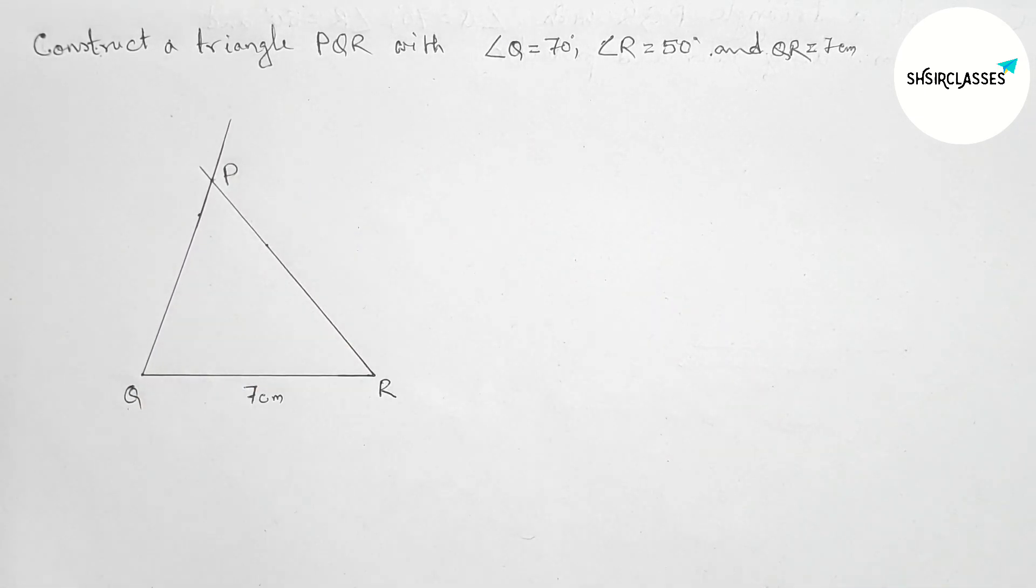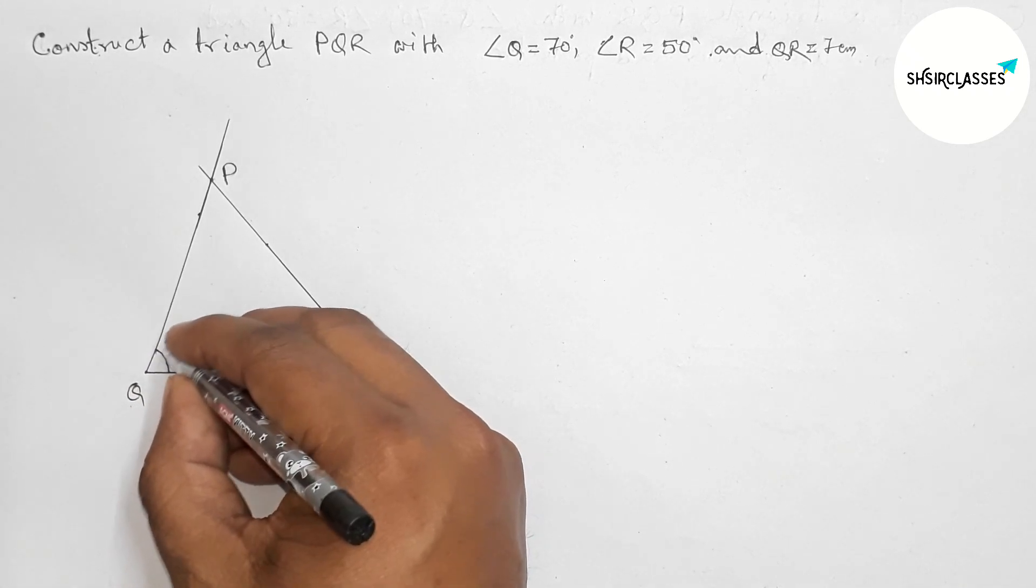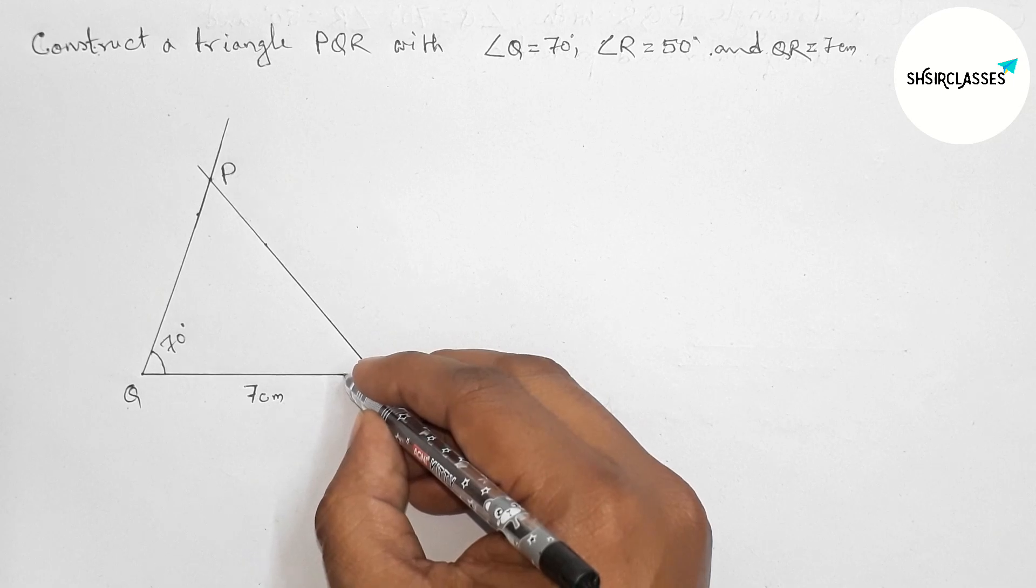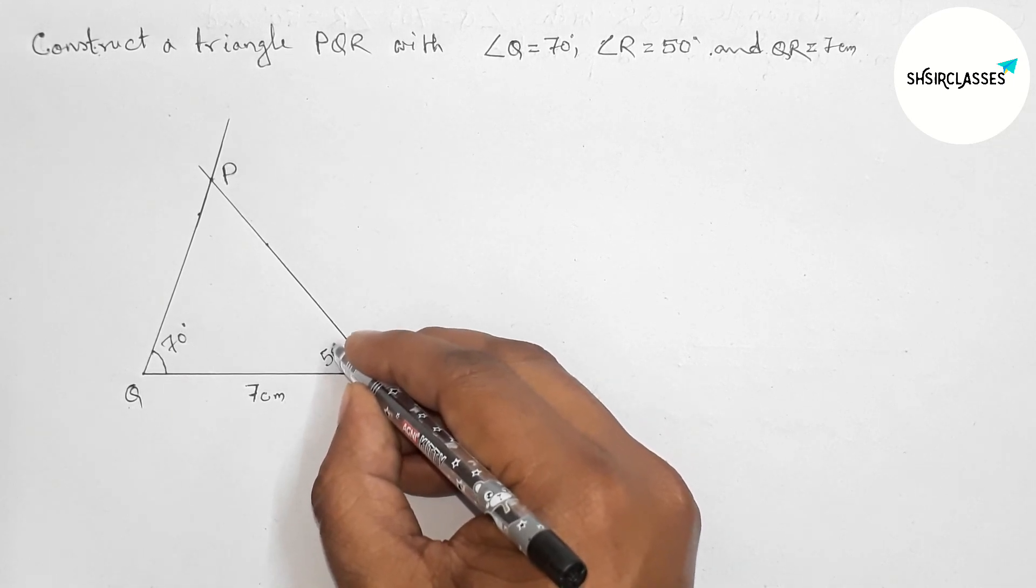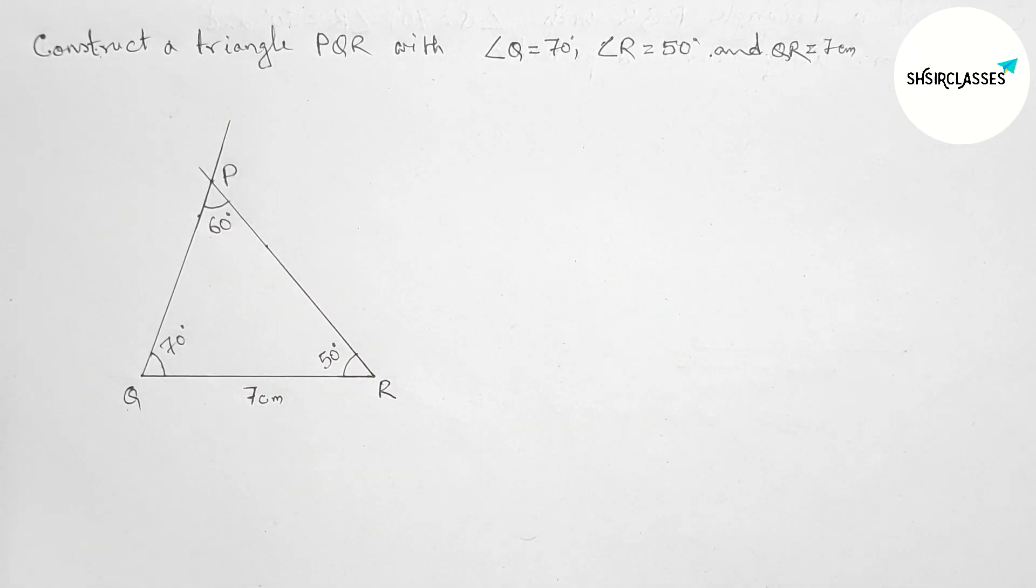So both the lines meet at a point. Taking point here P. So this angle is 70 degrees and this angle is 50 degrees, and this angle obviously is 60 degrees.